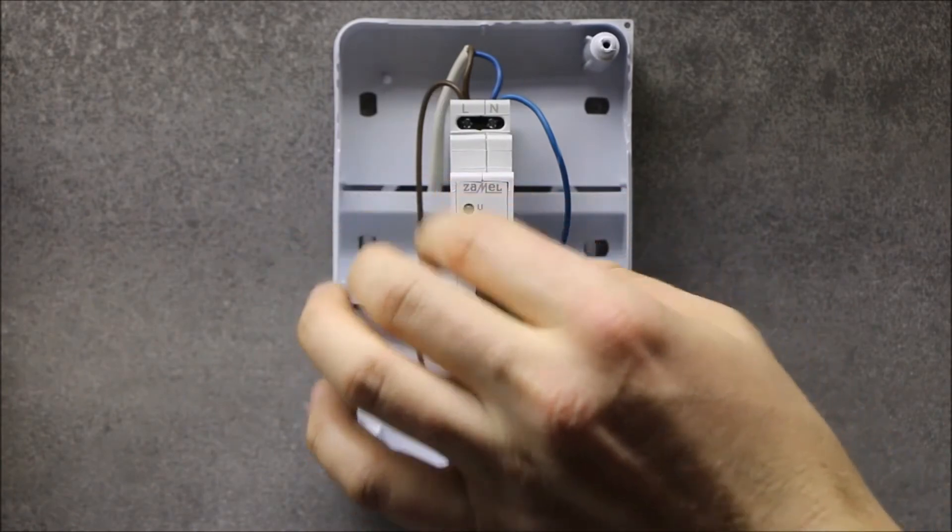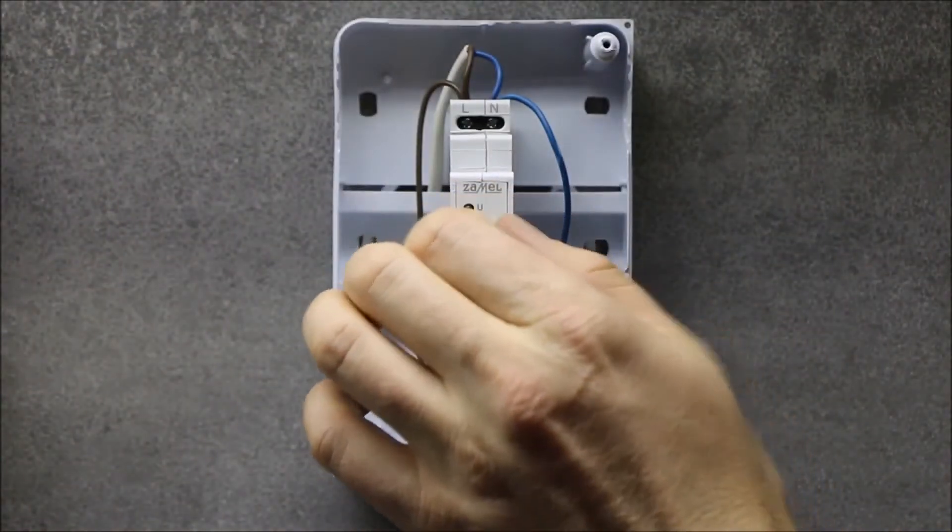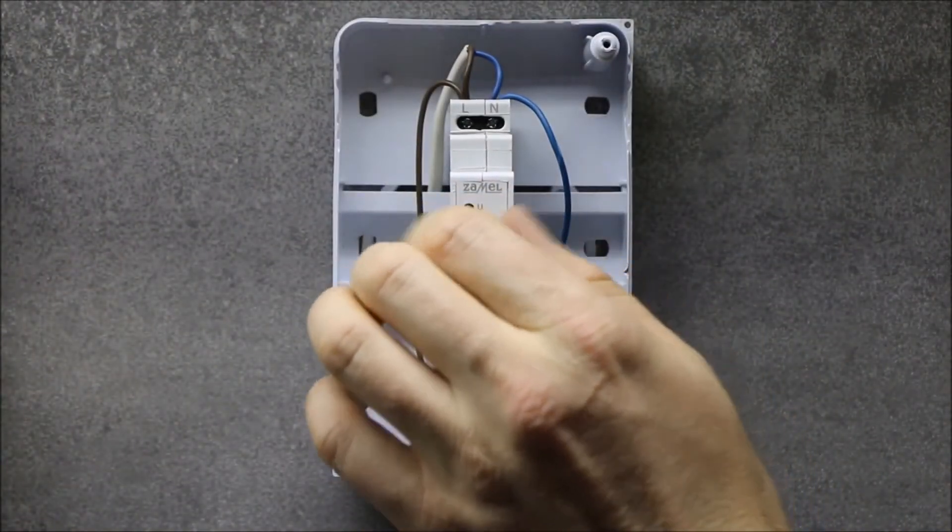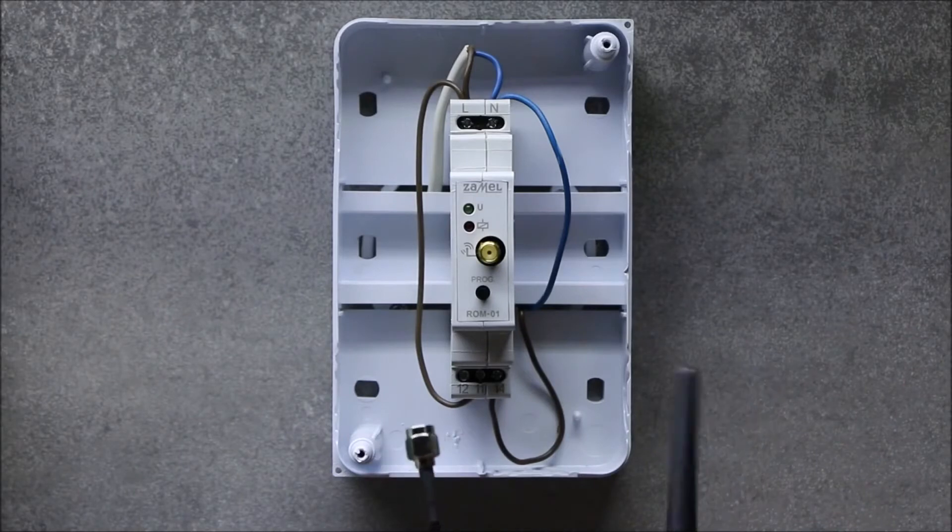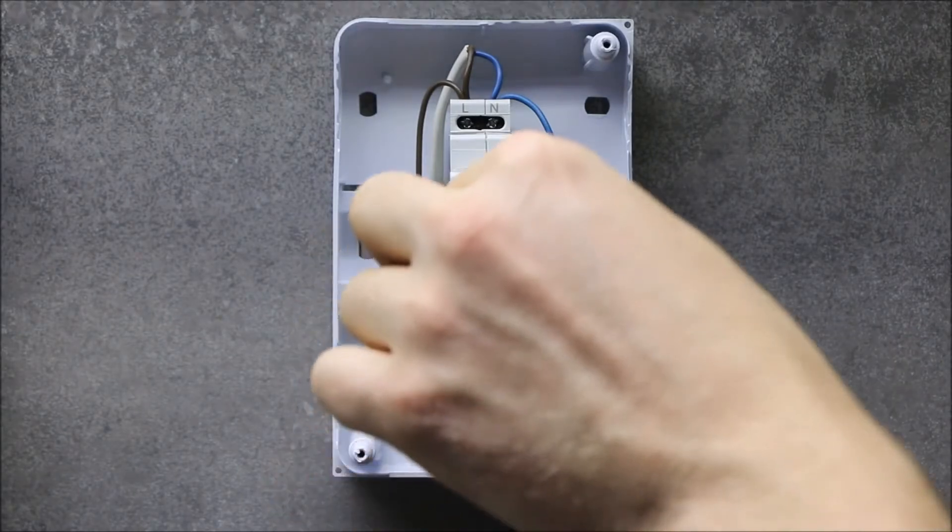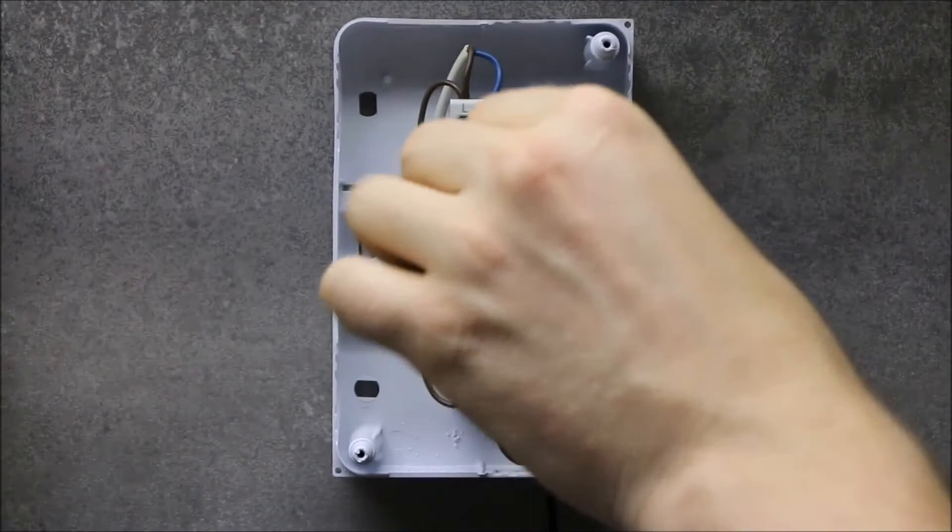In order to increase operation range, it is possible to replace the original antenna with the external antenna ANT-01, which could be placed outside the switchboard. For this purpose, a built-in magnet as well as 3-meter connection cable will be useful.